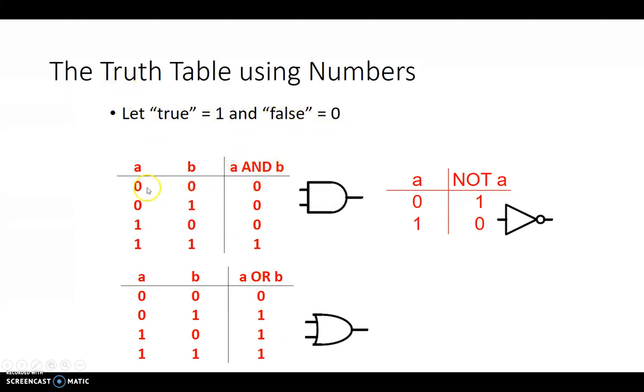So, here's the AND gate. 0, 0 produces a 0, so false, false produces a false. True, true produces a true, so 1, 1 produces a 1. In the case of a NOT, a 0 produces a 1, a 1 produces a 0. So, these are called logic 0 and logic 1. 1 basically means true, 0 means false.